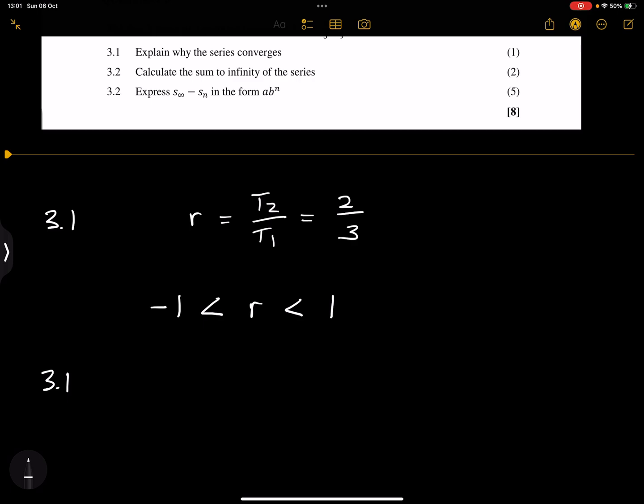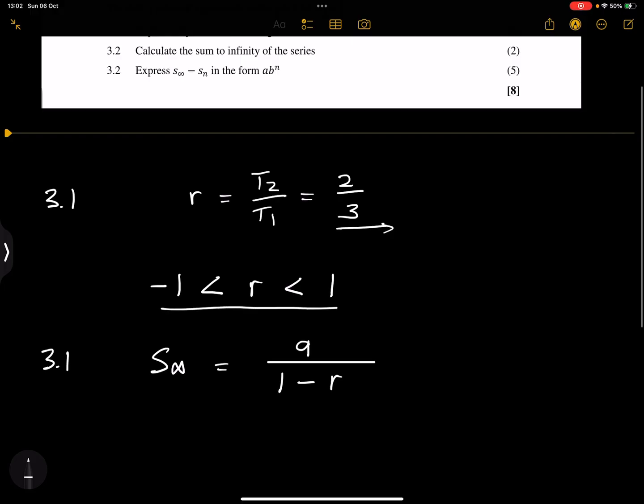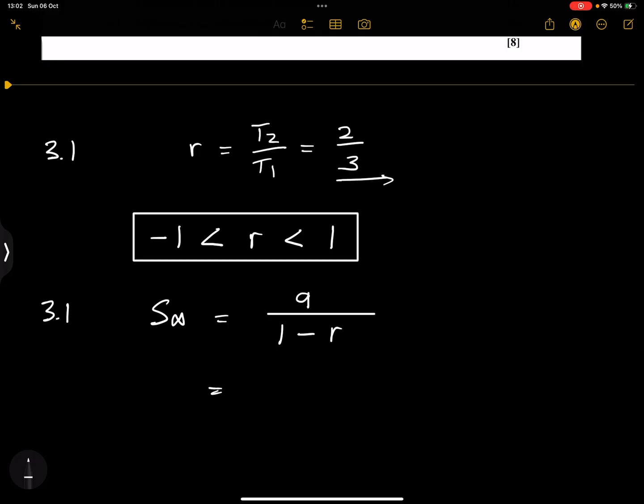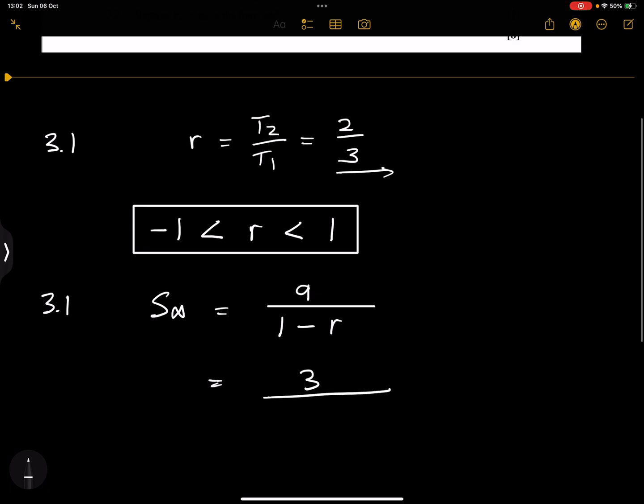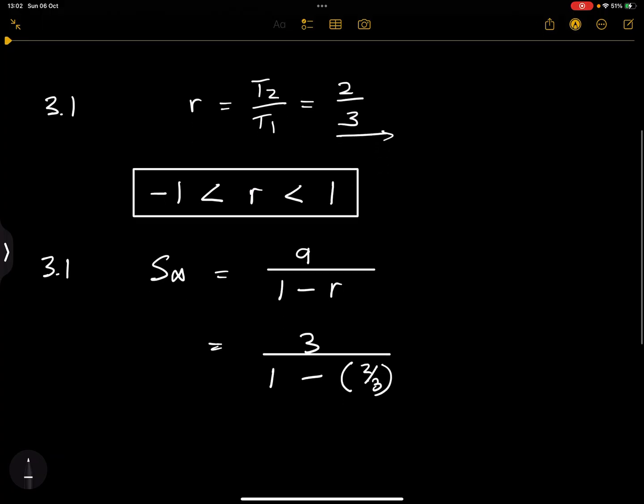Now they say calculate the sum to infinity. So remember, sum to infinity, we always say A divided by 1 minus R. And the condition for us to be able to get sum to infinity is that it must be a convergent series, right? So that means it must satisfy this condition that we've just written there. So that's going to be A, our A value is 3, the first term of the sequence, divided by 1 minus our R value, we just calculated it, is 2 over 3.